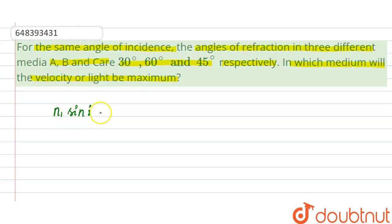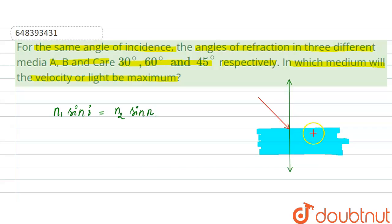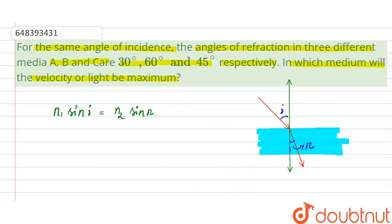n1 sine of incidence equals n2 sine of refraction. Now, what is the incident and refracted ray here? If we have two media — medium air and another material — light falls at the interface. This is the normal. If the second medium is denser, light bends towards the normal. This angle is the angle of incidence and this is the angle of refraction.